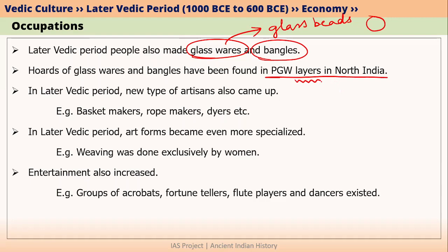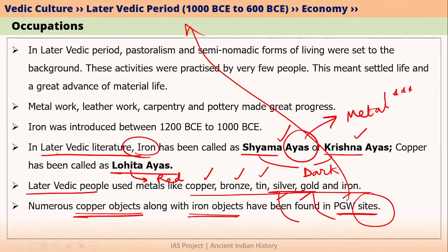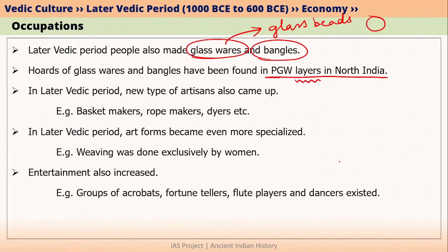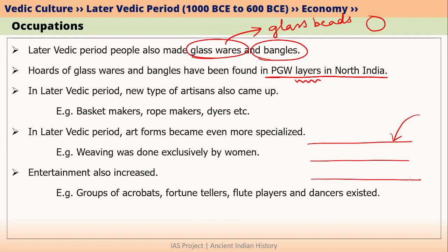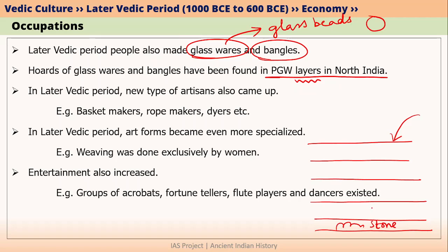Sometimes the word 'layer' is used and sometimes 'site' — so what is the difference? A site can be any place. Once you go to a site and start digging, you will find different artifacts in different layers. A layer simply means a depth. At the bottommost layer you may find stone tools; in the layer above, copper tools; in the layer above that, PGW pottery along with iron tools.